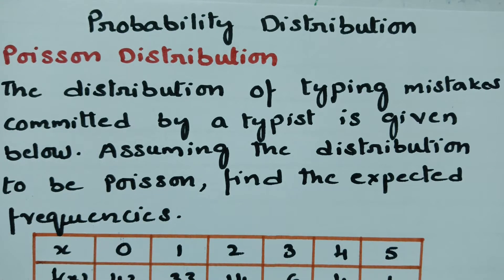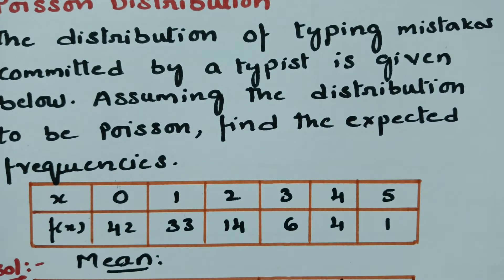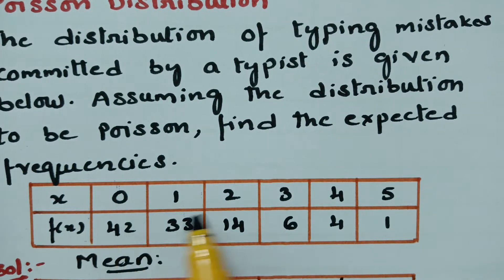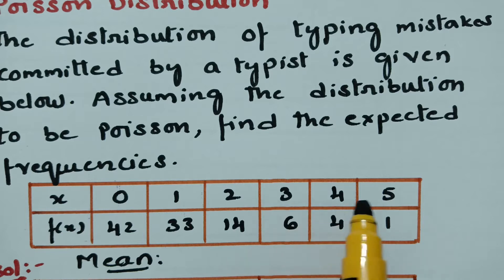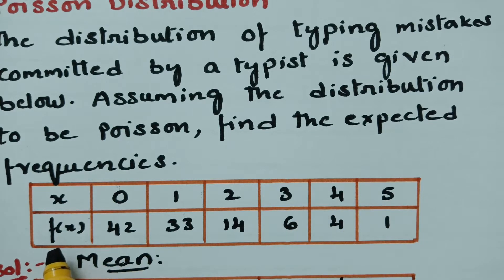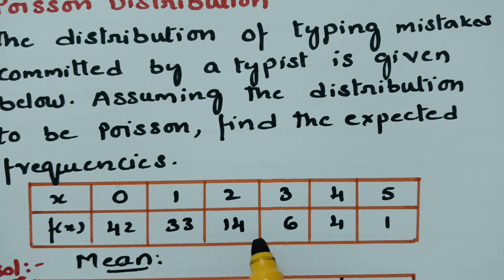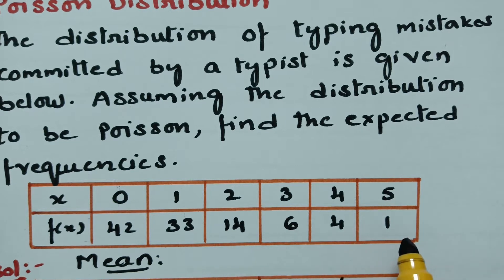The x values are 0, 1, 2, 3, 4, and 5. And the frequencies f(x) are 42, 33, 14, 6, 4, and 1.